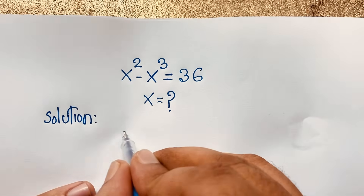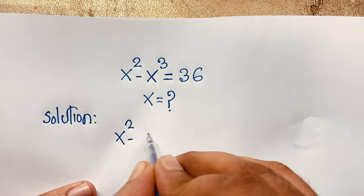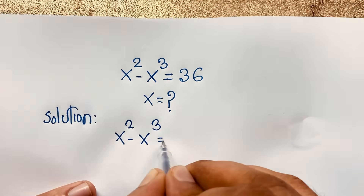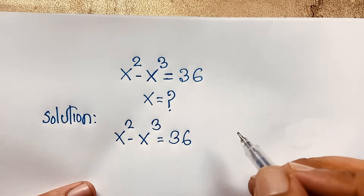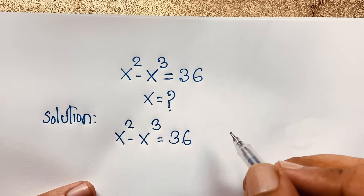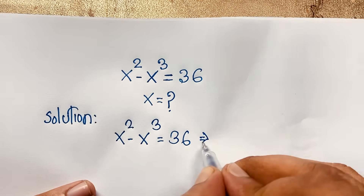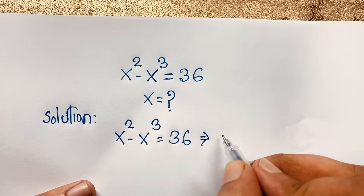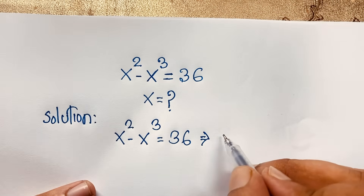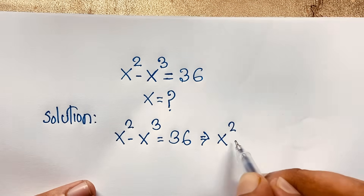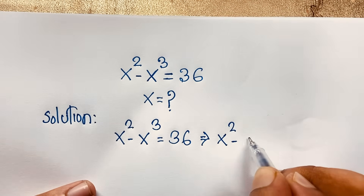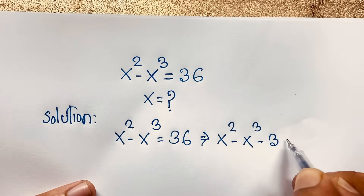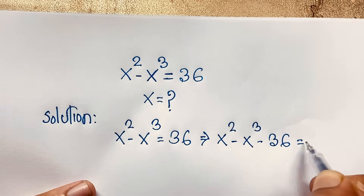Our question is x squared minus x cubed is equal to 36. I move this 36 to this side, so it becomes negative 36. So here, x squared minus x cubed minus 36 is equal to 0.